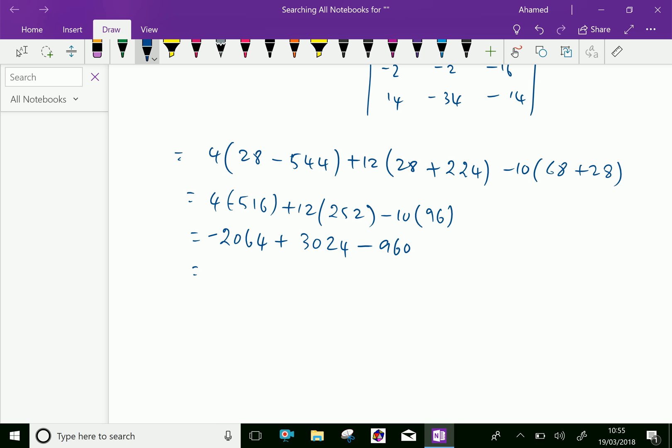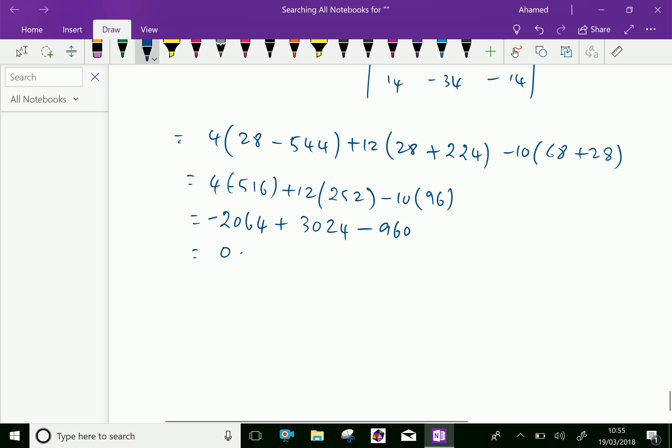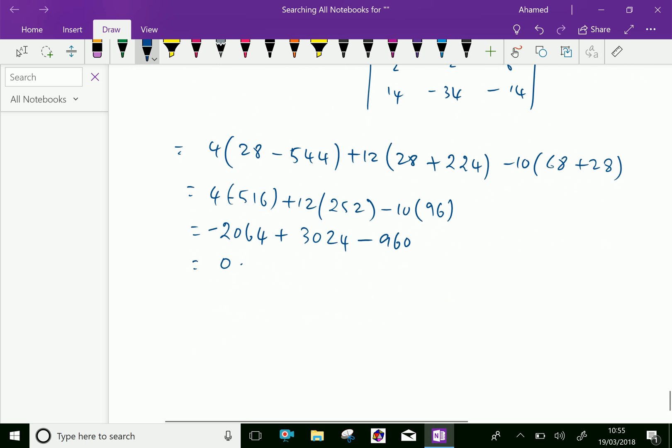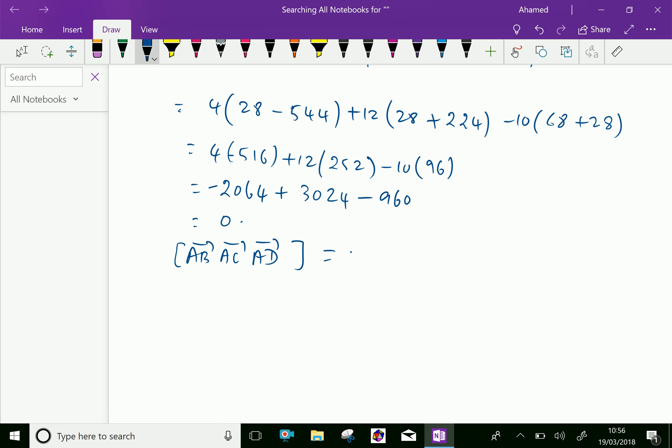Let us calculate this: minus 2064 plus 3024 minus 960 equals 0. We got scalar triple product equals 0. That is, AB, AC, AD scalar triple product equals 0.